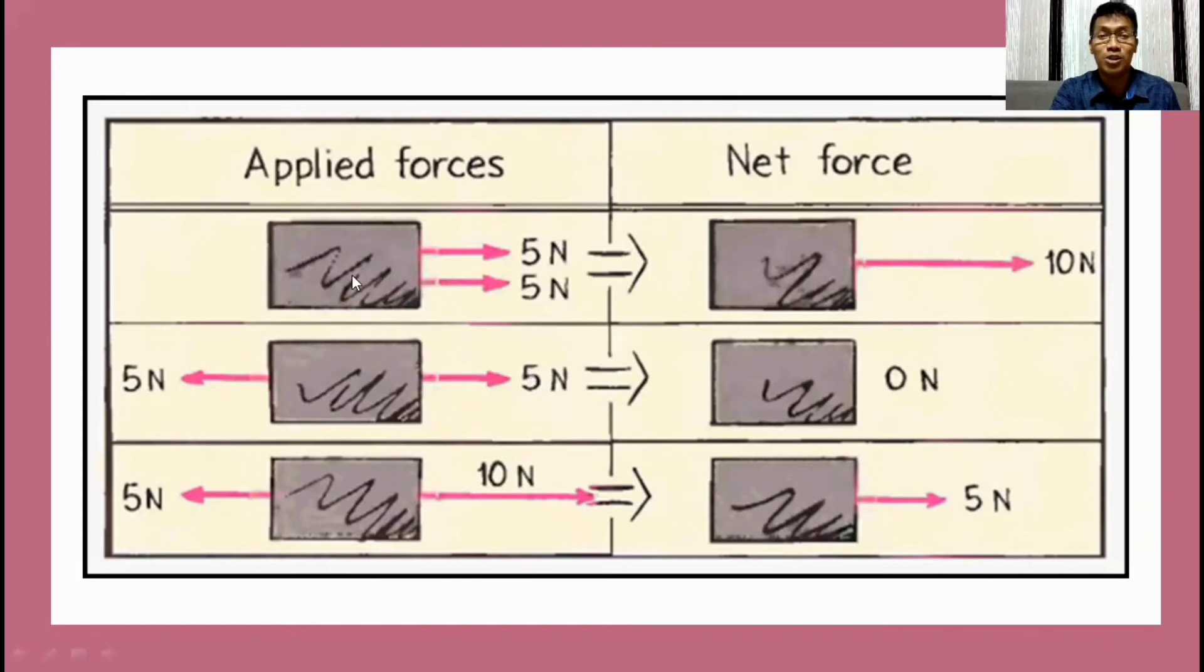We know that this object will move forward because of a net force equal to ten. So what we did here, we just added these two forces exerted and so the net force is ten because the direction is the same. And with that, that certain block of metal or that object will move forward. And this is an example of unbalanced force.